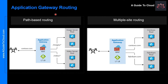There are two primary methods for routing traffic: path-based routing and multi-site routing. Path-based routing enables you to send requests with different paths in the URL to different pools of backend servers. For example, you could direct requests with the path /video to the backend pool containing servers optimized to handle video streaming.